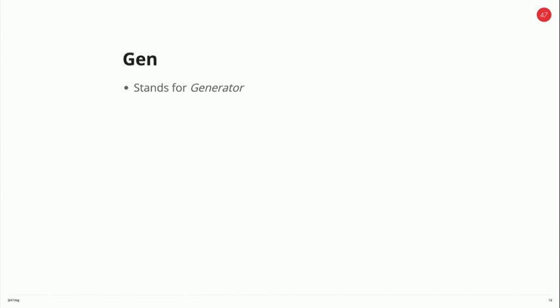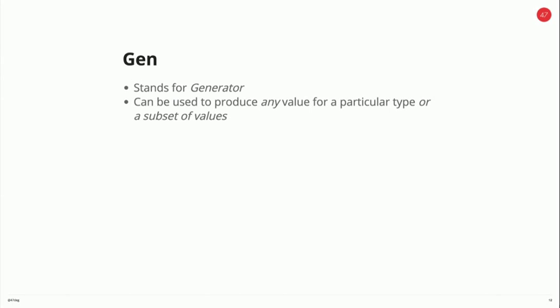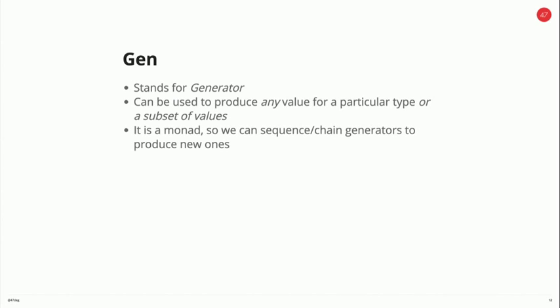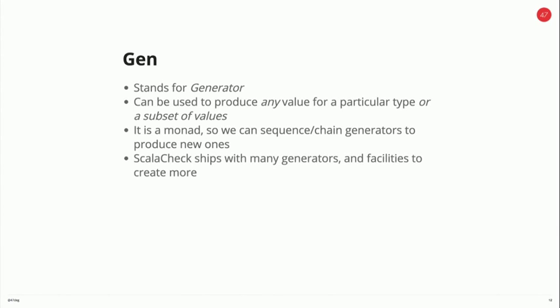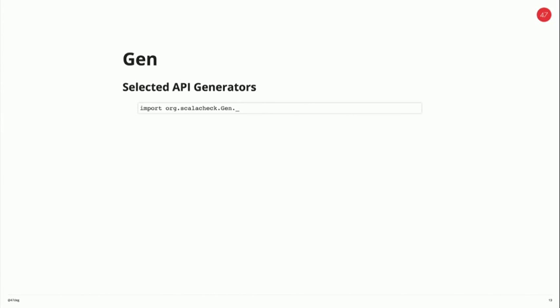We'll look at these classes in a little bit more depth. So, gen — gen stands for generator. It can be used to produce any value for a particular type or a subset of those values. We saw there with generating non-empty lists, we're actually just generating a subset. It's a monad, so that means we can use these together to create new generators with relative ease. ScalaCheck itself ships with a lot of these generators, so if you're dealing with core types in the Scala language, generators for those will probably already exist.